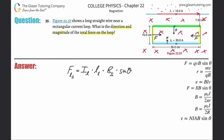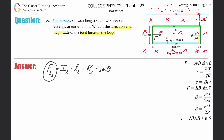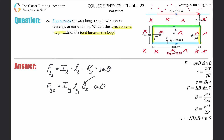The force on the green segment produced by the straight wire equals the current in the green wire times the length of the green segment times the magnetic field strength of the straight wire, times sin(θ). Since the current is perpendicular to the magnetic field, sin(90°) = 1, so that term drops out.